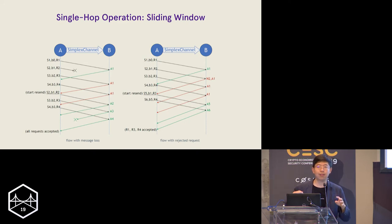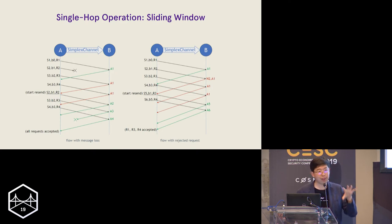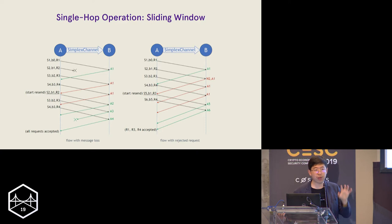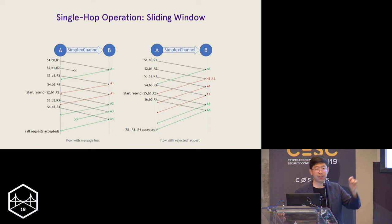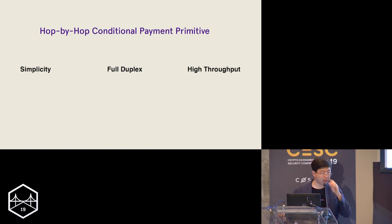Everyone says that layer two has infinite capacity, but that's not actually the case. In a layer two network like Lightning, if you can only send one payment per round trip time, the throughput is very limited by latency. If the round trip time is 100 milliseconds, you can only support 10 transactions per second on that link. So we made the entire protocol fully concurrent and introduced a sliding window derived from TCP congestion control — but importantly different, because in TCP packets are independent, whereas here each conditional payment state is built on top of existing states. Handling failures and packet loss in this model is a key topic, and that's fully documented in our open source protocol specification.